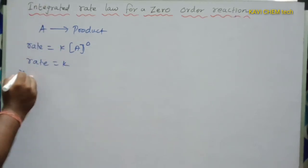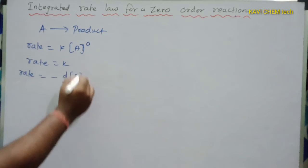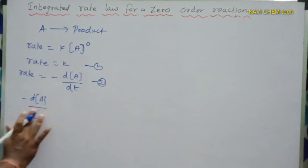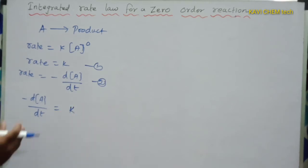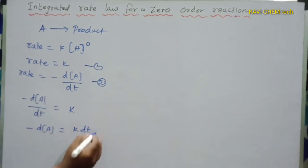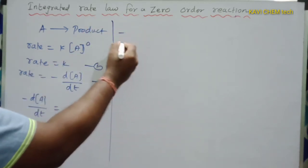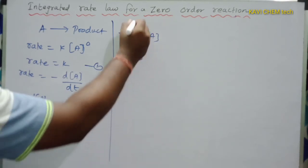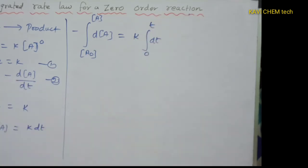Using our usual expression, rate equals minus d[A]/dt. Equating the two expressions, minus d[A]/dt = K. Rearranging, minus d[A] = K dt. Integrating both sides with limits — concentration from A₀ to A, and time from 0 to t — with K as a constant outside the integral.